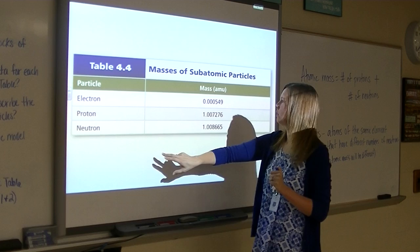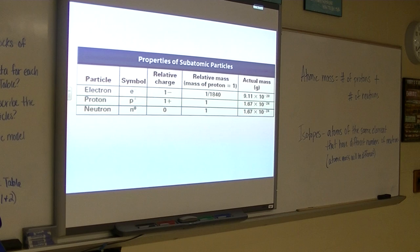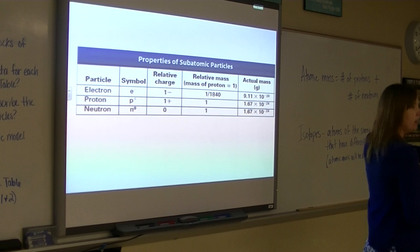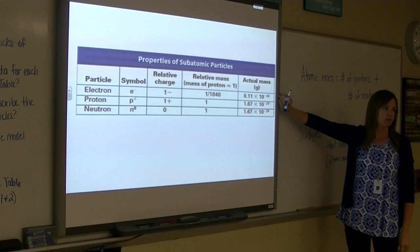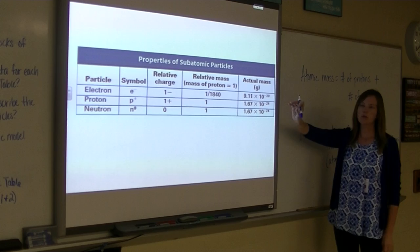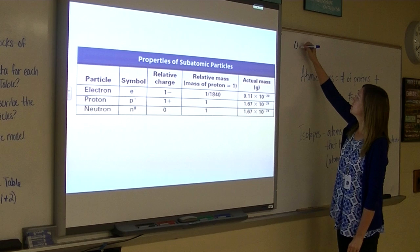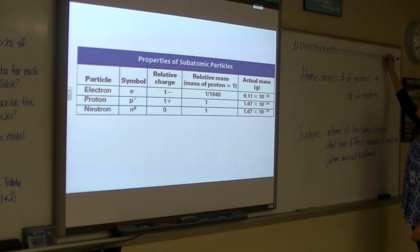But what I want to show you is this. So see over here, this is actual mass in grams. Remember when we talked about mass in general, we talked about one gram being what? One paper clip, right? One paper clip is one gram. So look at the mass of an electron in grams. You guys done scientific notation before? Yeah. Okay, so times 10 to the negative 28 means you take the decimal point and you have 28 spots to the left, right? Which means we would have 27 zeros.